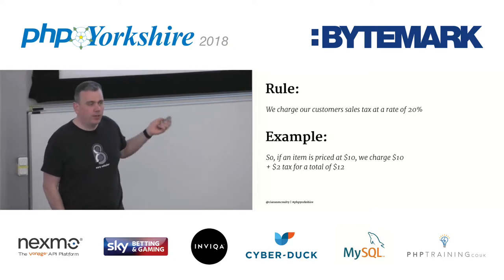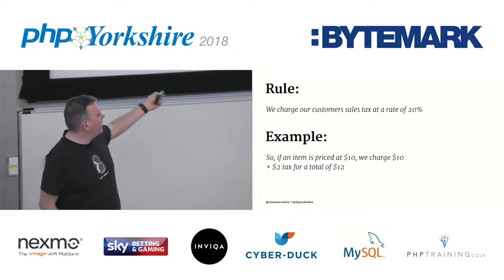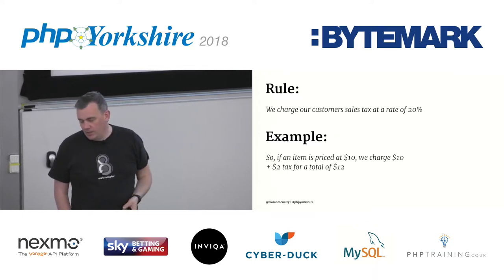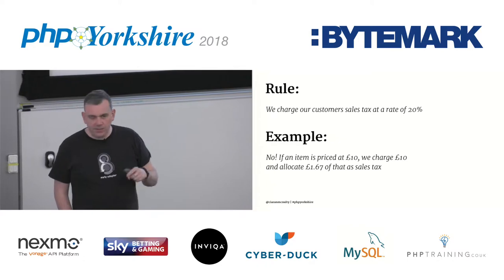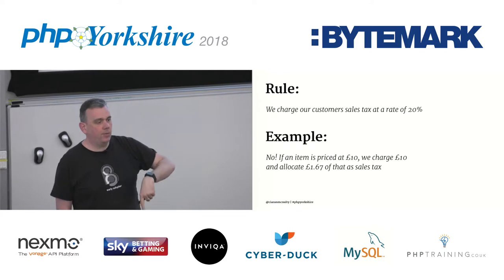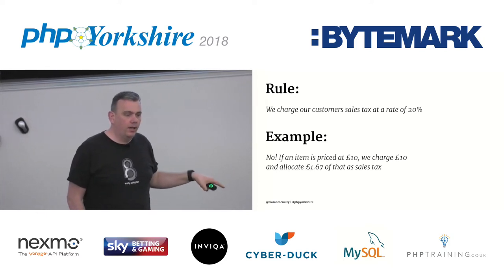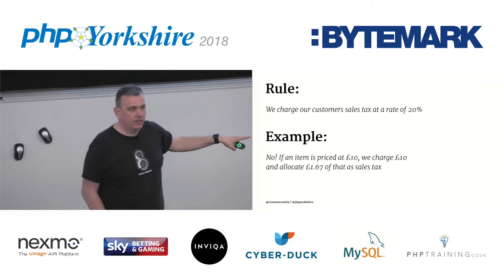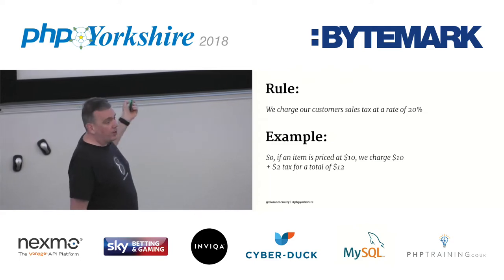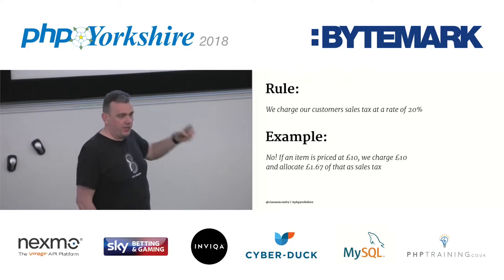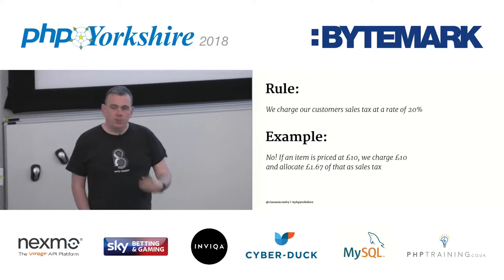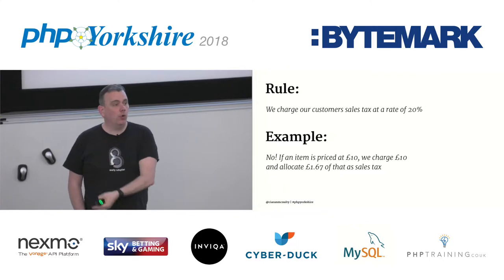With a simple rule and an example, the other person has the opportunity to say: no, that's not how it works here. What actually happens is if an item's priced at £10, we charge £10 — we just remember retrospectively that some of that was sales tax, and we store it and pay it at the end of the year to HMRC. It's a very different model. So even with a simple rule, giving an example gives the other person the opportunity to say: that's not quite how I understood it — can we talk more about it?